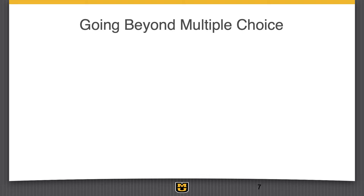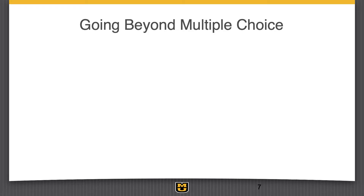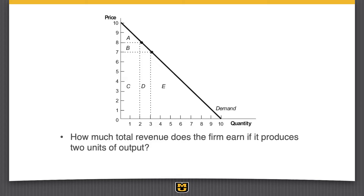Now we're going to dive into some questions — the econ-based ones should be gimmies, but it's more fun if we walk through them. Part of this is the idea of going beyond just standard multiple choice questions. One thing I like to use is question sequences — taking a problem, breaking it down into bits, and doing a sequence of multiple questions in a row. First one: we have a demand graph here. How much total revenue does the firm earn if we have two units of output? This is a numeric question — type in a number.